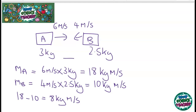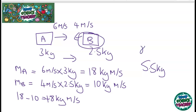The combined object will be travelling with a positive momentum of 8 kg·m/s in the direction of car A. Because they've stuck together, the new combined mass is 3 + 2.5 = 5.5 kilograms. Since momentum equals mass times velocity, velocity equals momentum divided by mass: 8 ÷ 5.5 = approximately 1.45 metres per second.